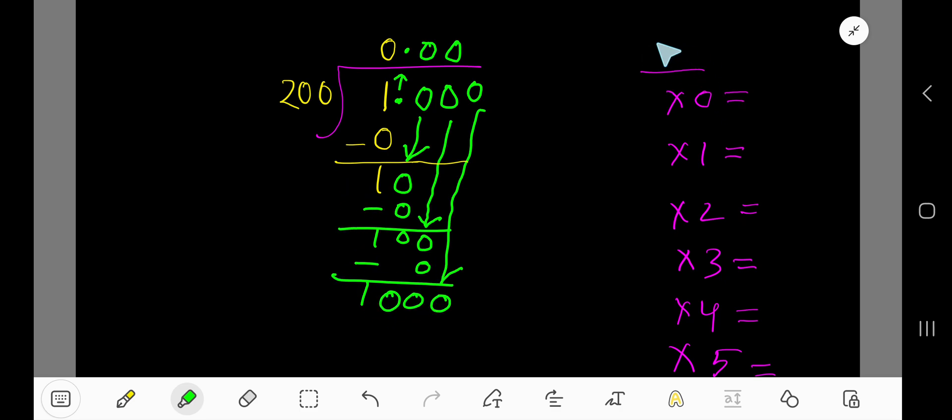We need multiplication table of 200. 200 times 0 is 0. 200 times 1 means just add 200 with the previous step. So you are getting 200. 200 times 2, just add 200 with the previous step.